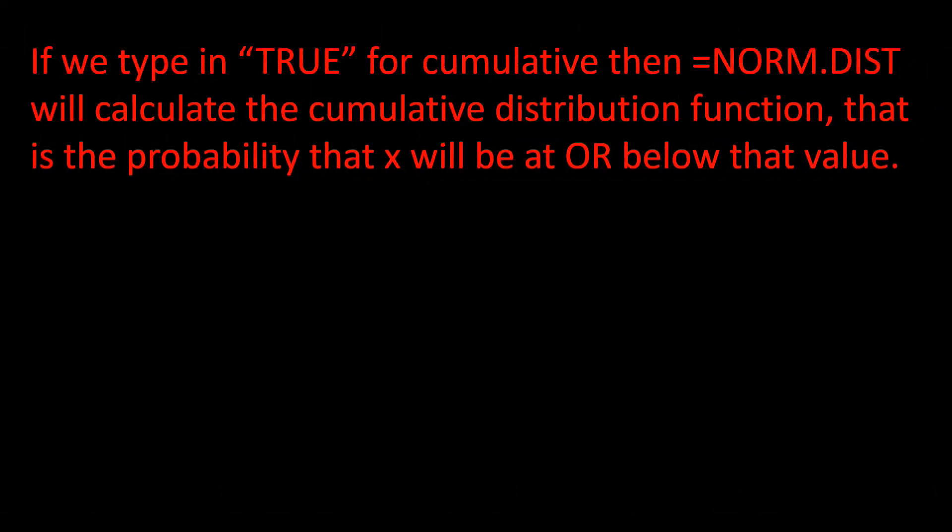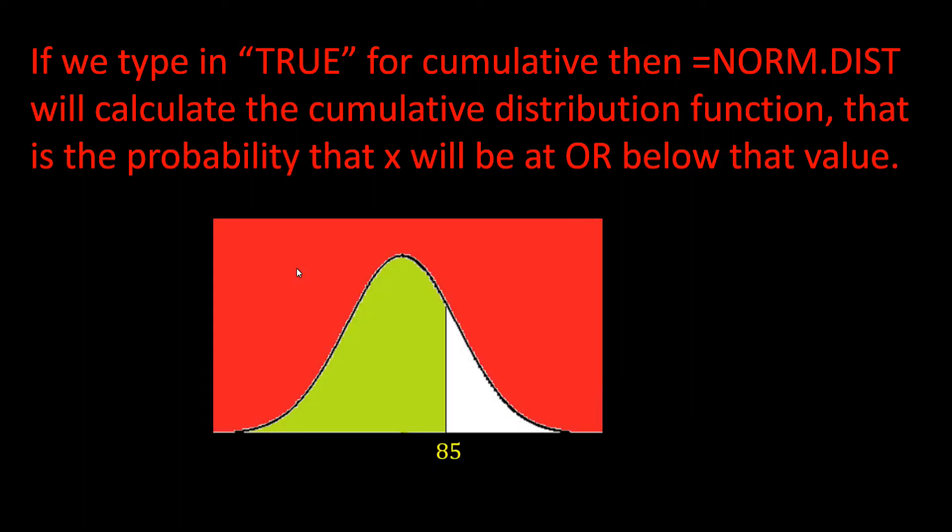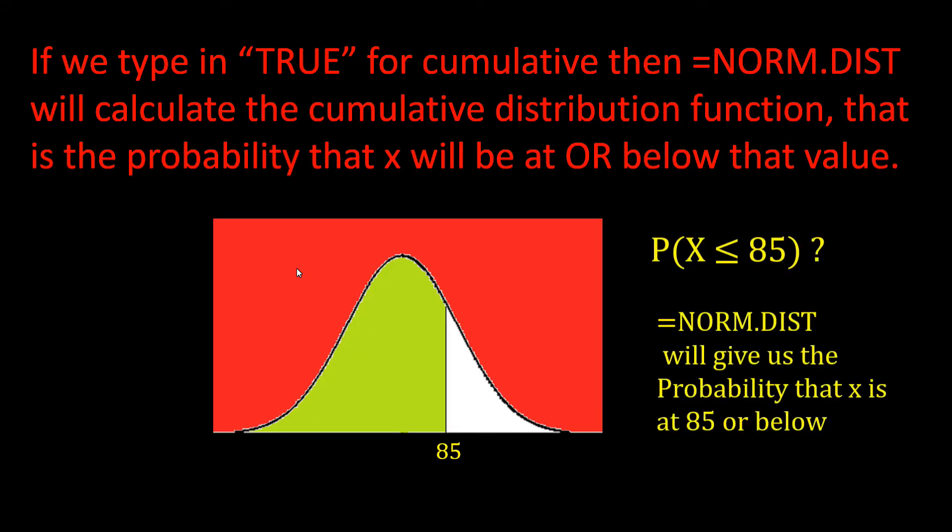If cumulative is TRUE, then NORM.DIST will calculate the cumulative distribution function. That is the probability that x will be at or below that value. Here you can see the normal distribution curve shaded in green below the number 85. If we use x as 85, then the Excel function will give us the probability that x is 85 or below.